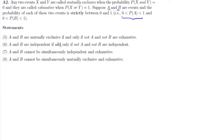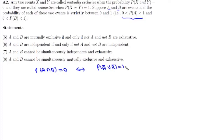We are given that A and B are mutually exclusive. If A and B are mutually exclusive, then P(A ∩ B) = 0, and we have to prove this holds if and only if not-A and not-B are exhaustive, meaning P(A⁰ ∪ B⁰) = 1. Looking at this probability, P(A⁰ ∩ B⁰) = 1 gives us P(A ∩ B) = 0.